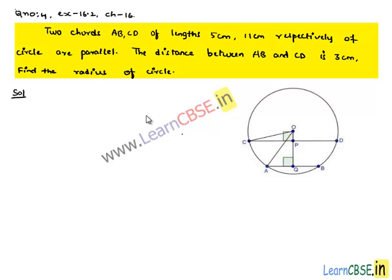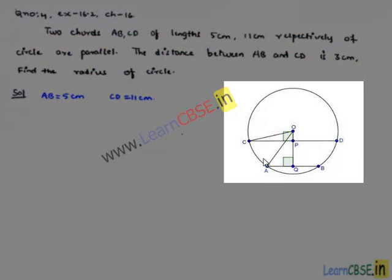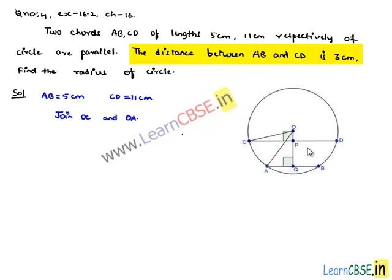Coming to the solution, consider two chords AB equal to 5 cm and CD equal to 11 cm as given. Represent them in the figure with circle of center O, and join OC and OA as shown. It is given that the distance between the two chords is 3 cm, so if we draw a perpendicular line PQ, the distance PQ will be equal to 3 cm. Join the perpendicular from the center, so OQ is a straight line.